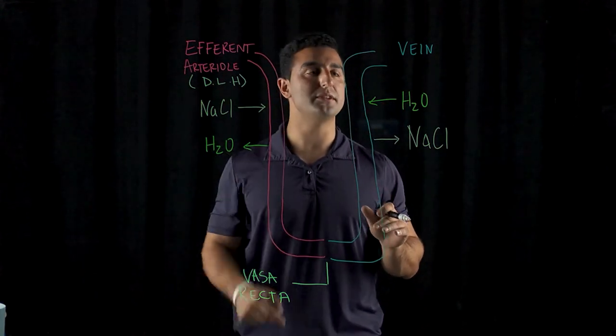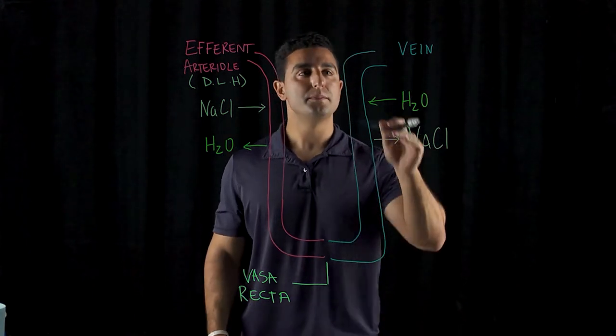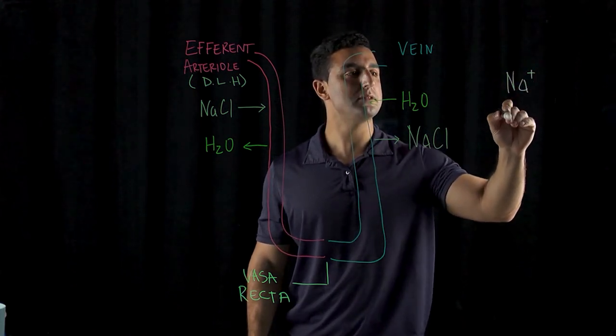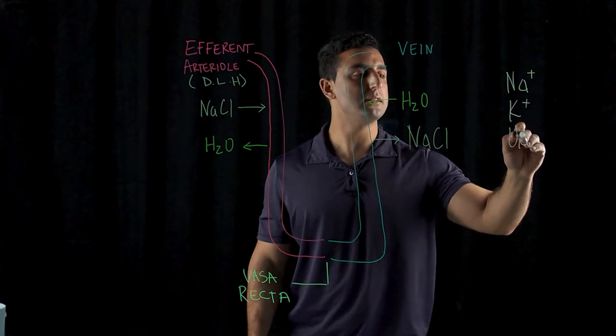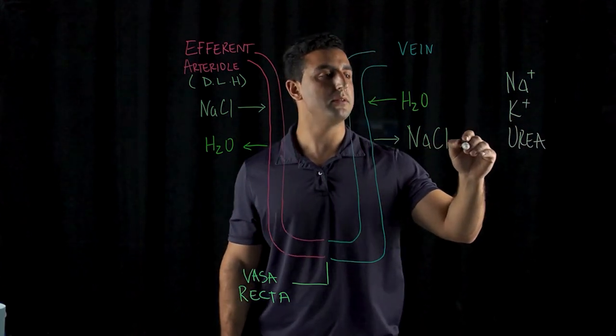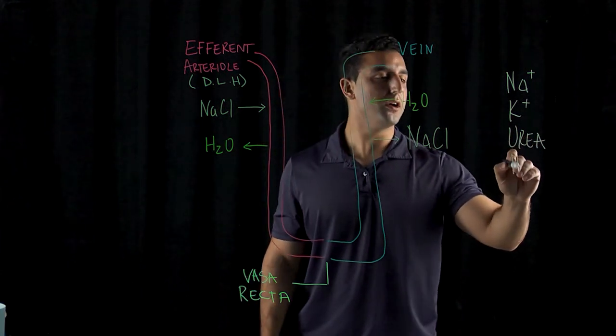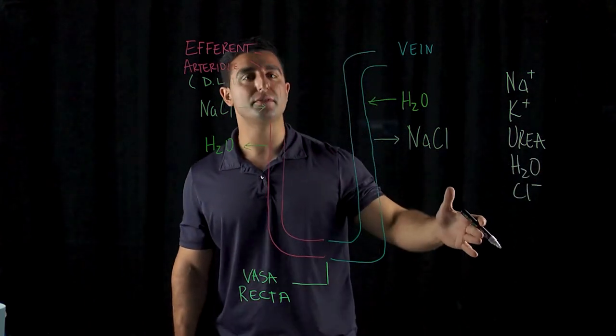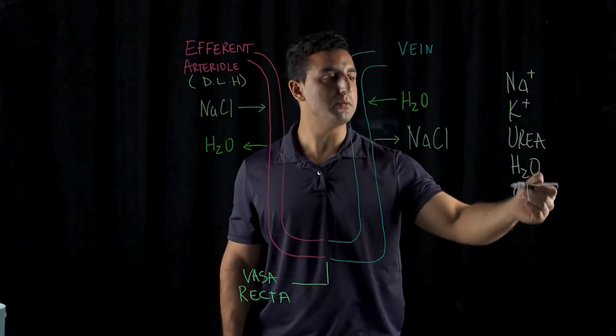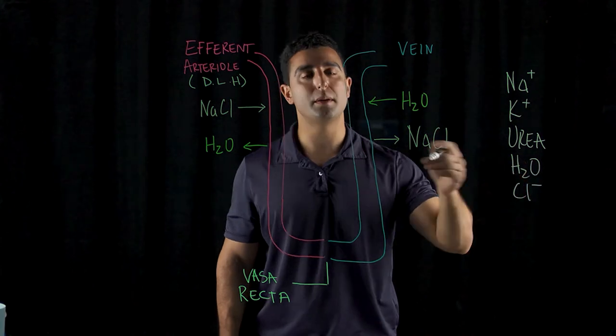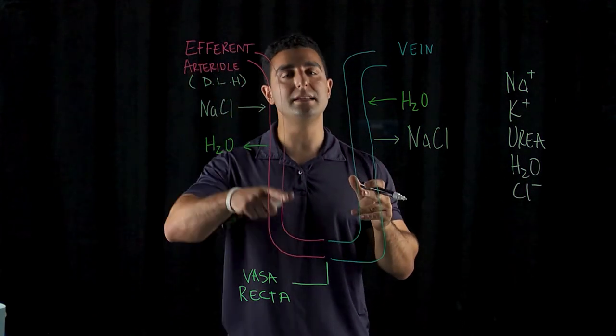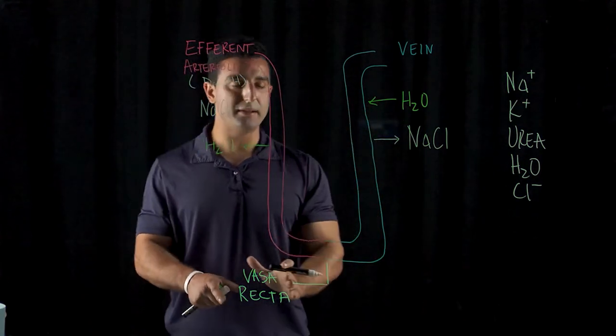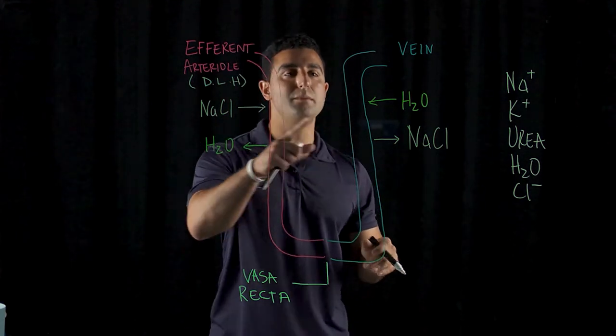Vasa recta, specifically the afferent arterioles in the veins, unlike the loop of Henle, the vasa recta is permeable to sodium, potassium, urea. So urea is this metabolite created in the liver that is one of the main components of urine and also water. So chlorines to other ions as well. So they're very permeable to not only ions, but also water. So if you remember from the descending and ascending loop of Henle, descending was only permeable to water, whereas the ascending was only permeable to salt. Here it's not the case. In the vasa recta, not the case. So anything can move in passively.